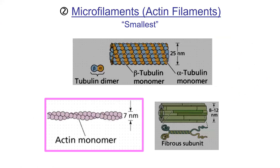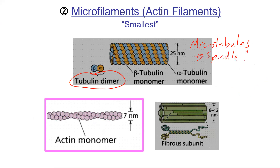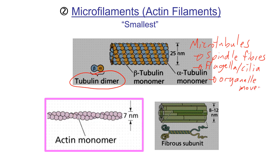We're returning to topic seven. We previously talked about microtubules — they are made of tubulin and are used for spindle fibers, flagella and cilia, and movement of organelles. Those are the main features of microtubules.